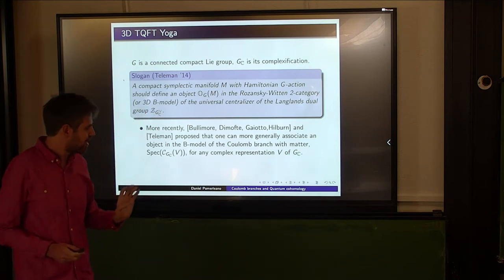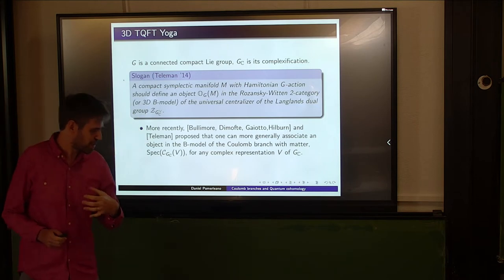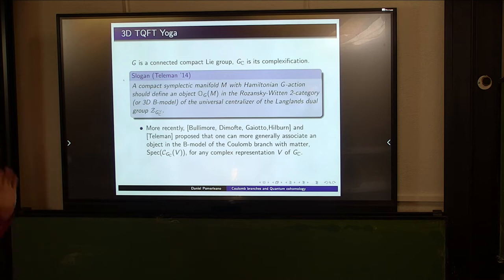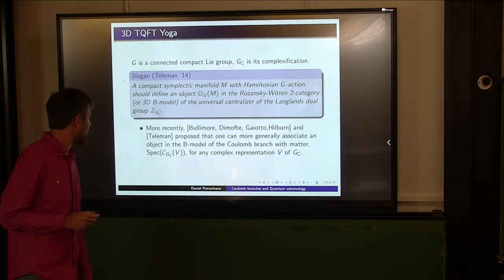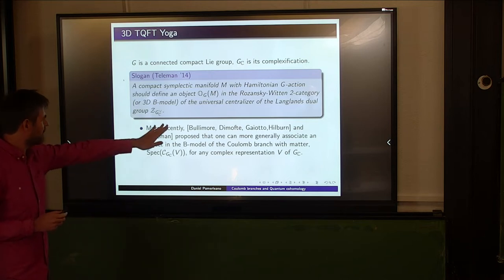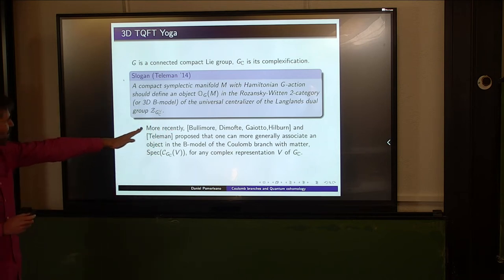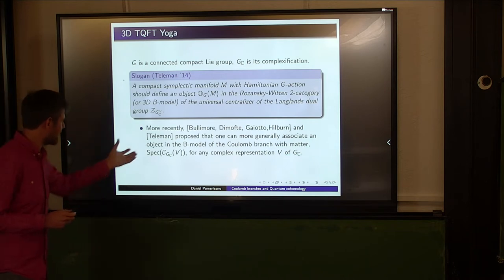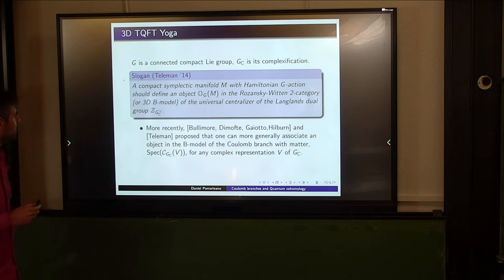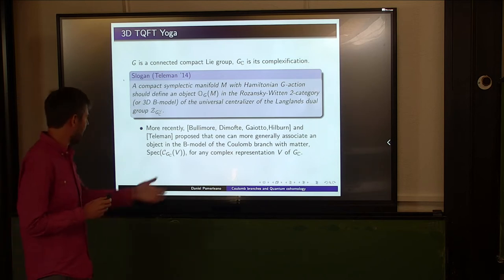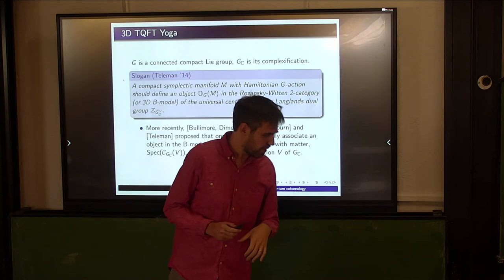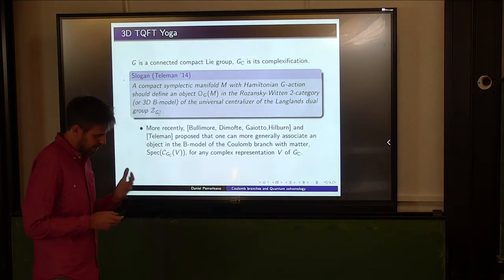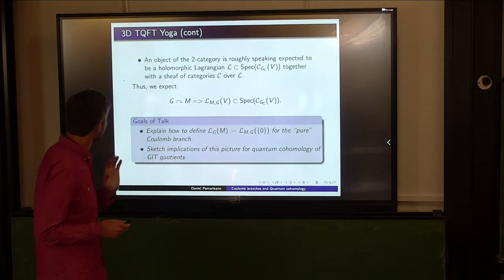It's a two-category of a certain holomorphic symplectic manifold which is the centralizer of the Langlands dual group. As a symplectic topologist, that's the only time I'll be able to say 'Langlands dual group' — I'll give you a different way to think about it in terms of traditional topology. More recently, many people in the audience and Constantine independently proposed that with the same data you can get an object of the B model of any Coulomb branch with mass, as constructed by Braverman, Finkelberg, and Nakajima.